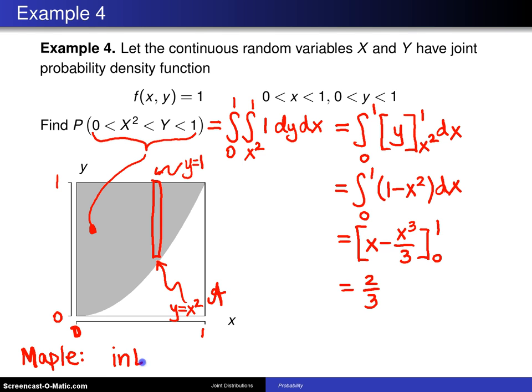And here is the way that it is done in Maple. It is int of int of 1, which is the integrand. And this is for y going from 1 up to x squared, and outside for x going from 0 up to 1. And you close all Maple statements with a semicolon.